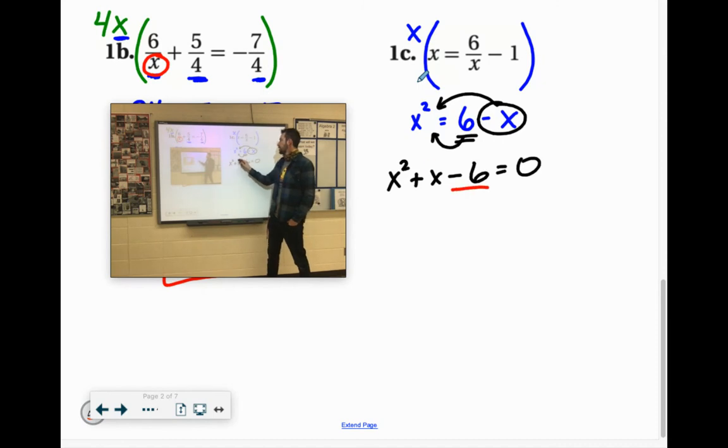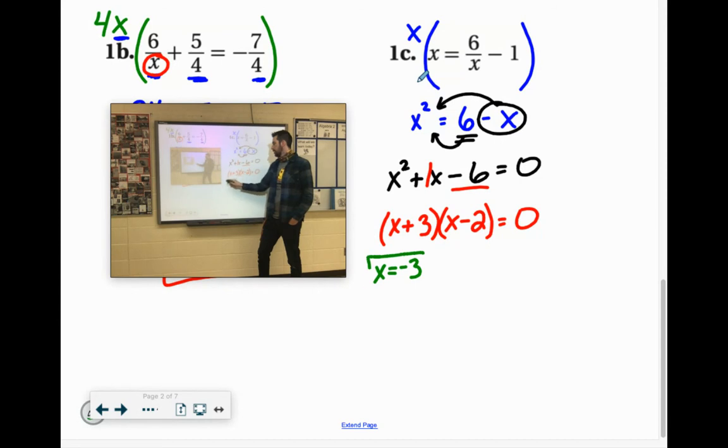Factors of negative 6 that add up to positive 1 would be x plus 3 and x minus 2, which gives you the two solutions of x equals negative 3 and x equals positive 2.